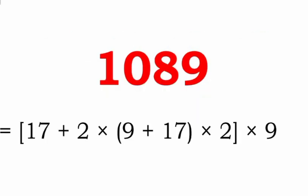This is the first representation of 1089 using the digits 1, 7, 2, and 9 only. We can write it as 17 plus 2 into 9, plus 17 into 2, whole multiplied by 9.